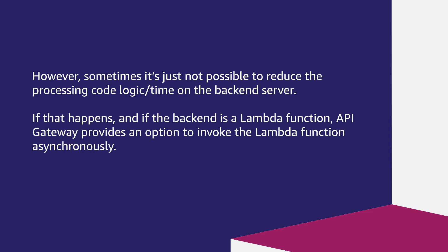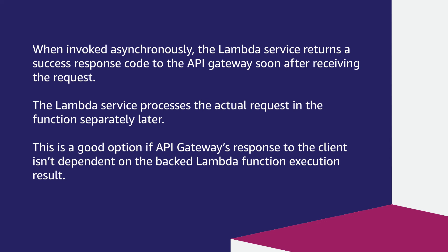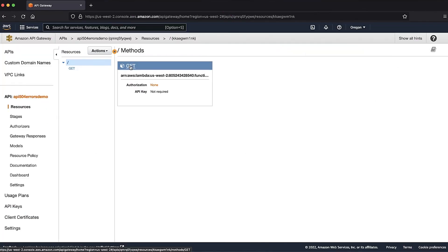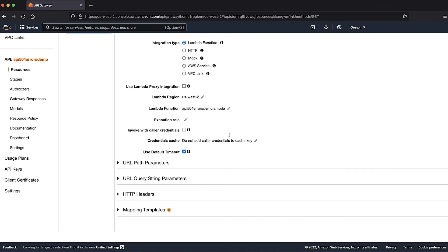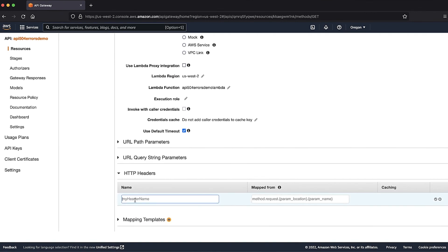However, sometimes it's just not possible to reduce the processing code, logic, or time on the backend server. If that happens and the backend is a Lambda function, API Gateway provides an option to invoke the Lambda function asynchronously. When invoked asynchronously, the Lambda service returns a success response code to the API Gateway soon after receiving the request, and processes the actual request in the function separately later. This is a good option if API Gateway's response to the client isn't dependent on the backend Lambda function's execution result. To invoke a Lambda function asynchronously, we will set a custom header x-amz-invocation-type with value set to Event in the integration request configuration.